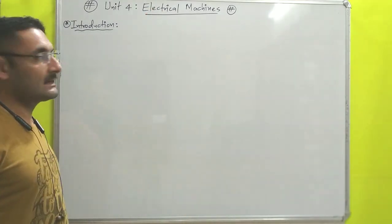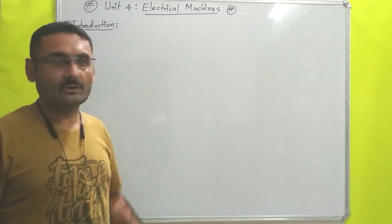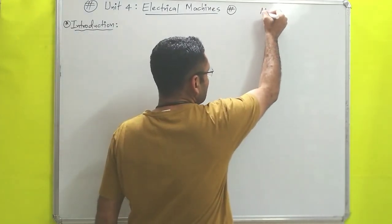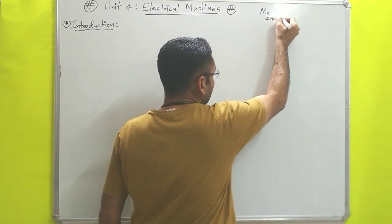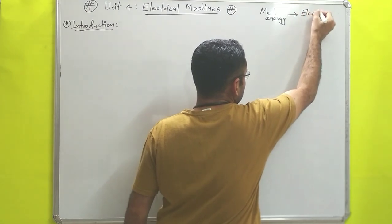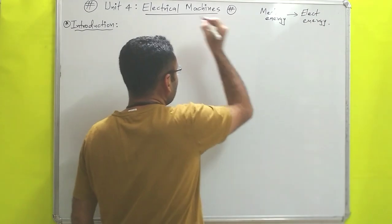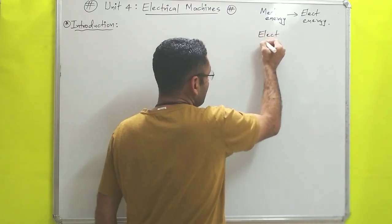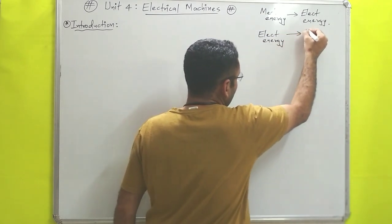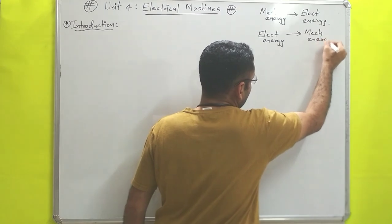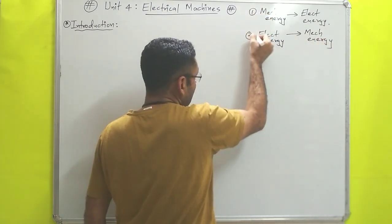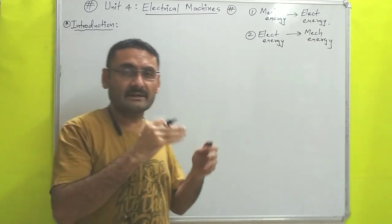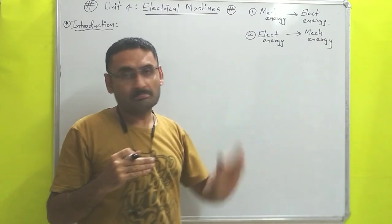First we will understand the meaning of electrical machines. An electrical machine is a device that will convert mechanical energy into electrical energy. Also, an electrical machine is such a device which will convert electrical energy into mechanical energy. So electrical machines can convert mechanical to electrical or electrical to mechanical.